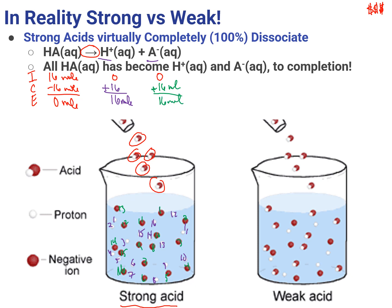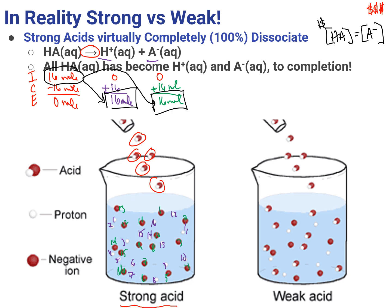Strong acid is strong not because it will damage you, but because it completely dissociates — which is a huge moment. For a strong acid, because it completely dissociates, whatever my moles of acid were, that's my moles of H+ at equilibrium at the endpoint. Those moles of acid equal the moles of H+ at equilibrium, and also the moles of our conjugate base at equilibrium.